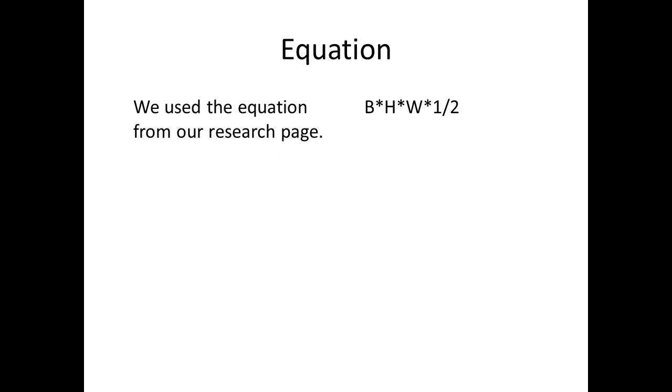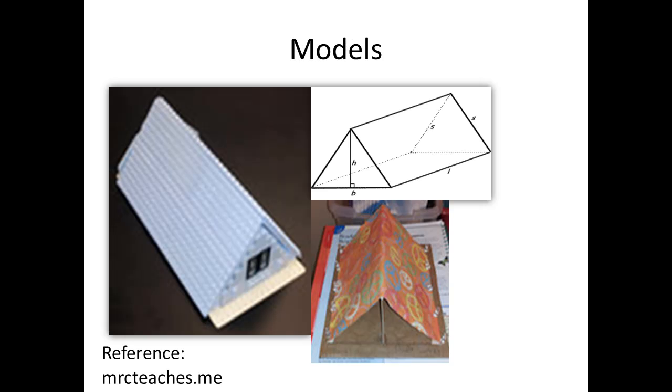Base times height times one half times width will be the equation. The model is a triangular prism and this is what your finished pup tent may look like.